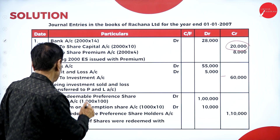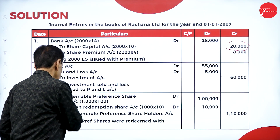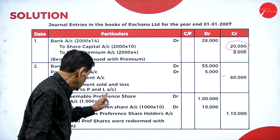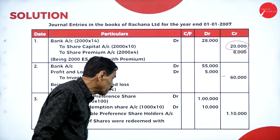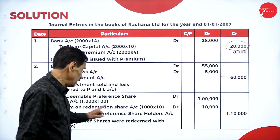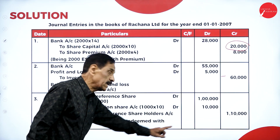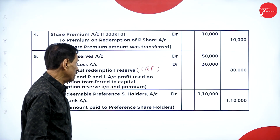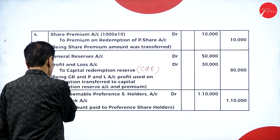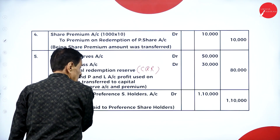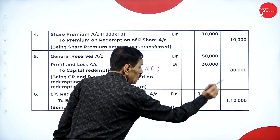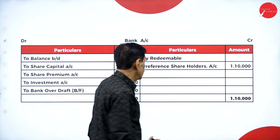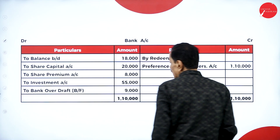Now go back to the transfer entry: Preference Share Capital Account Dr. one lakh; Preference Share Premium Account Dr. ten thousand; to Redeemable Preference Shareholder Account one lakh ten thousand. Then: Redeemable Preference Shareholder Account Dr. to Bank Account — one lakh ten thousand has been paid.